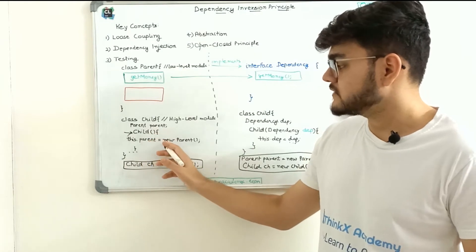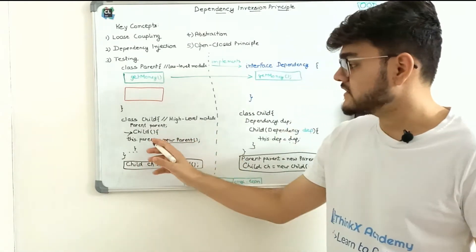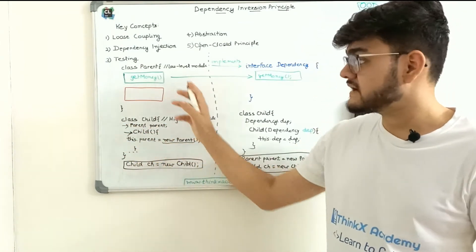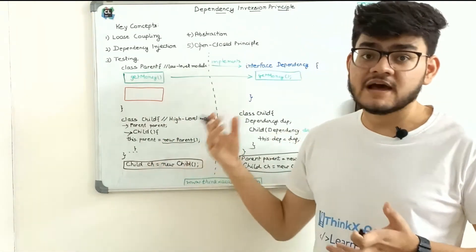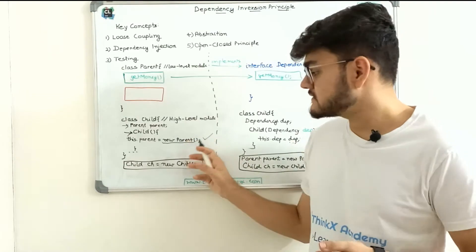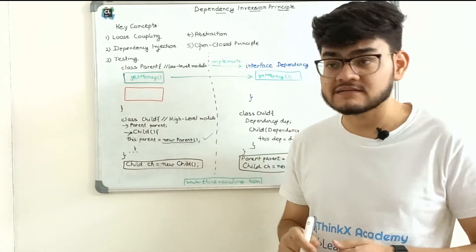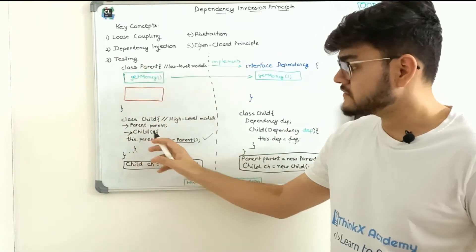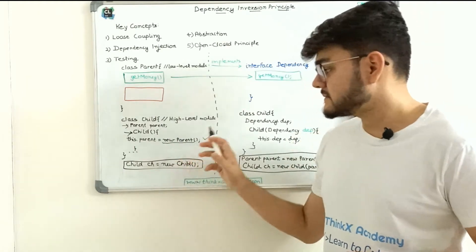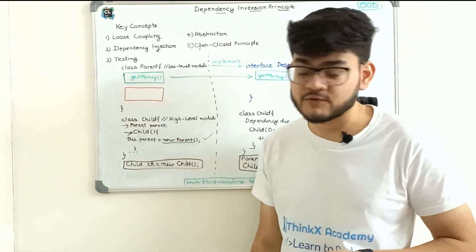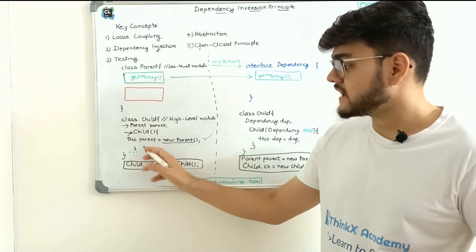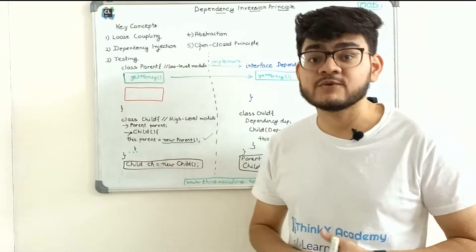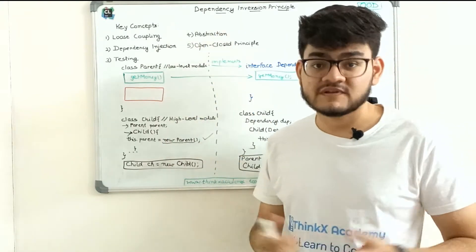Similarly, if the child is actually a car and we have an engine, we write `this.engine = new Engine`. In this way, the intern says I'm going to solve this problem using this approach. Now I can use the `ch` object and use this parent object to call the get money function. But there are some key problems with this kind of approach, and we will see how these problems can be solved using the Dependency Inversion Principle.